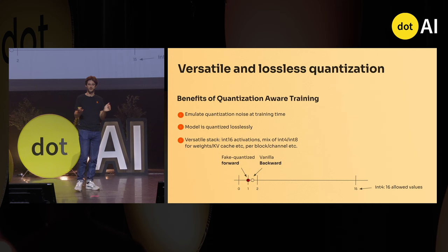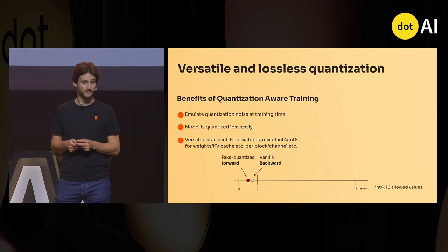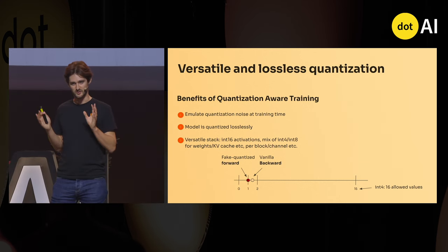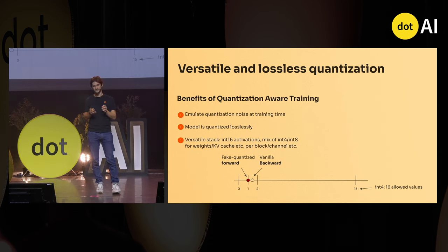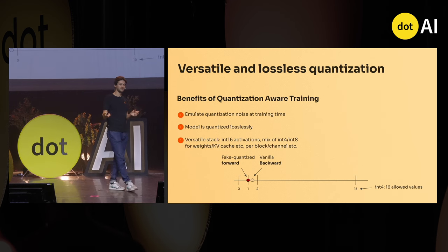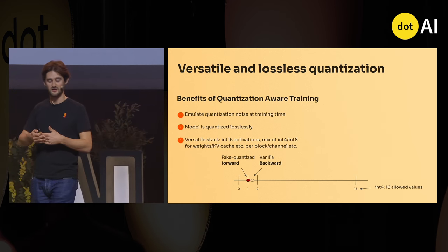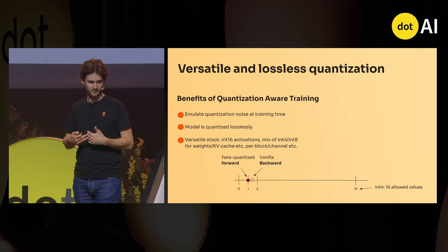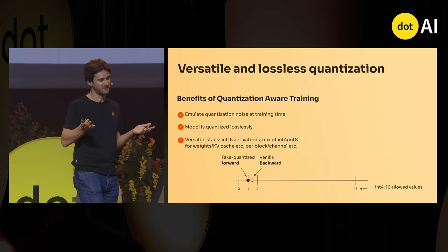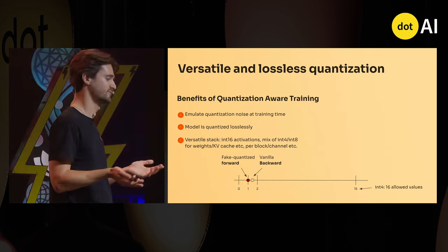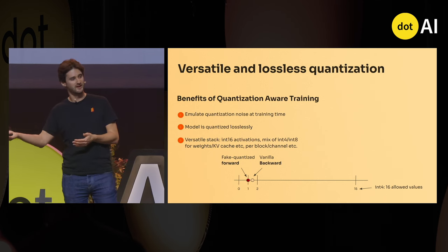The model also loses accuracy if you quantize naively — 16 values per weight will destroy the model completely, wasting all the effort put into data, training, fine-tuning, and compute. That's why we have a proprietary quantization-aware training stack, which allows you to quantize losslessly to 4 bits for the weights and 8 bits for the KV cache. The idea is simple: during training, you fake-quantize the weights and activations in the forward pass, and during the backward pass you use the straight-through estimator — using the original gray values for the backward — training the model to be resilient to quantization applied in production.